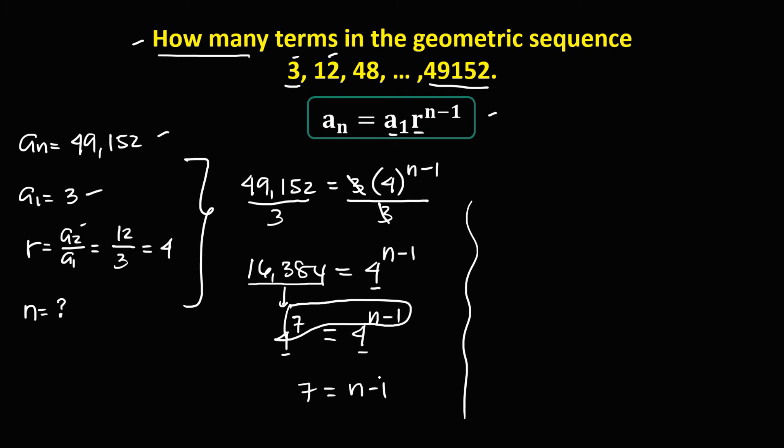To solve for n, transpose that negative 1, so we have 7 plus 1 equals n. Therefore, n is equal to 8. This sequence has 8 terms.